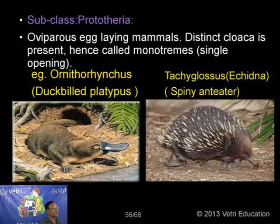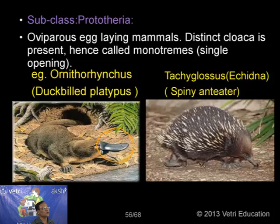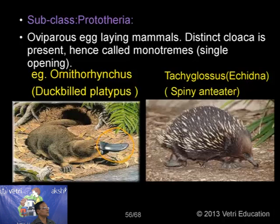Subclass Prototheria — egg-laying mammals. A distinct cloaca is present, hence the name Monotremata. Two living examples: the duck-billed platypus, Ornithorhynchus — having a bill looking like a duck — and Tachyglossus, the echidna or spiny anteater. Both are abundant in Australia. They are called mammals because they have the diaphragm, they have hair, and they have mammary characters — though they do not give birth to live young or have a uterus and pouch.